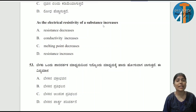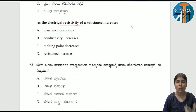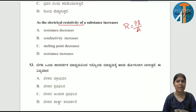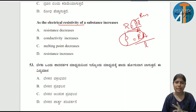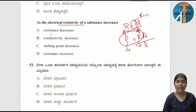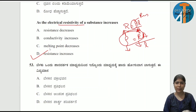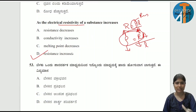As the electrical resistivity of a substance increases, what happens? Resistivity and resistance are directly proportional. If electrical resistivity increases, then resistance also increases. Simple as that — option is resistance increases.